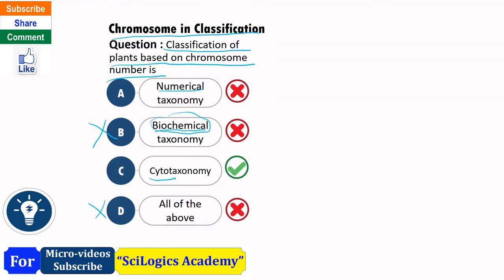Now we have two options: numerical and cytotaxonomy. Confusion may arise because the question mentions chromosome number, and one might think of 'numerical.' But note that cyto is related to cell, and chromosomes are present inside the cell, so we can correlate cytotaxonomy here.